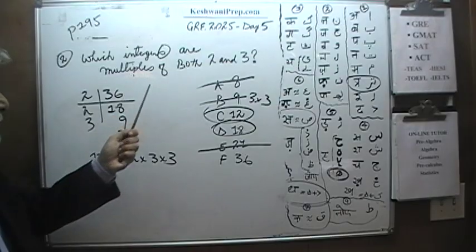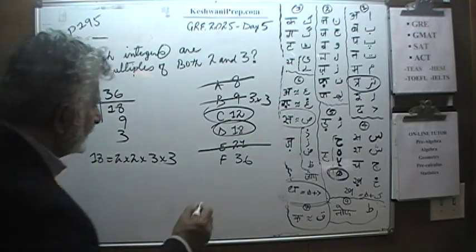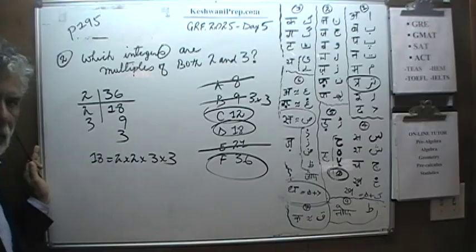Which of the integers were multiples of both 2 and 3? This particular question has 3 right answers.